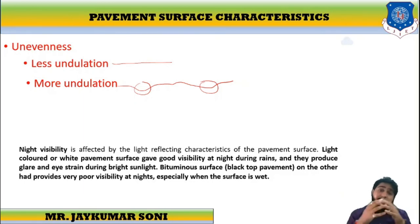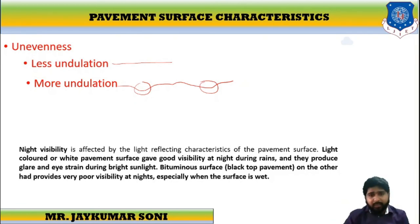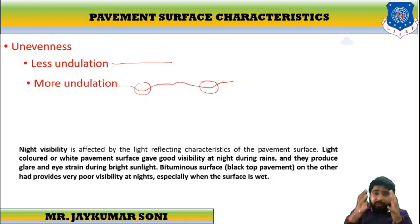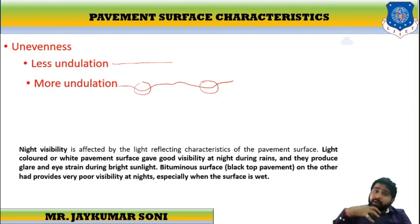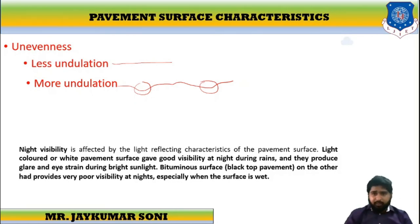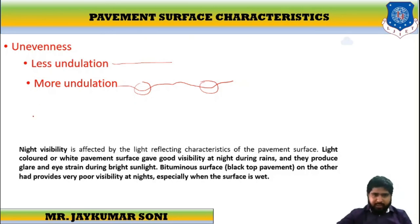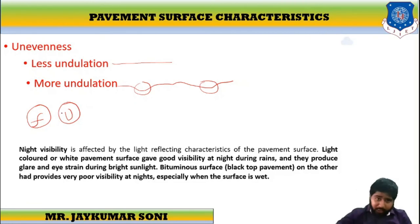Visibility may be compromised on a bright sunny day when high sunlight is reflecting on the road surface, creating glare. Conversely, if a bituminous surface — black top pavement — is there, visibility will be very less when traveling at night. If the pavement surface is wet and of black color, there will be issues of comfort and safety for the driver. So we have discussed friction, skidding and slipping, unevenness, and light reflecting characteristics.